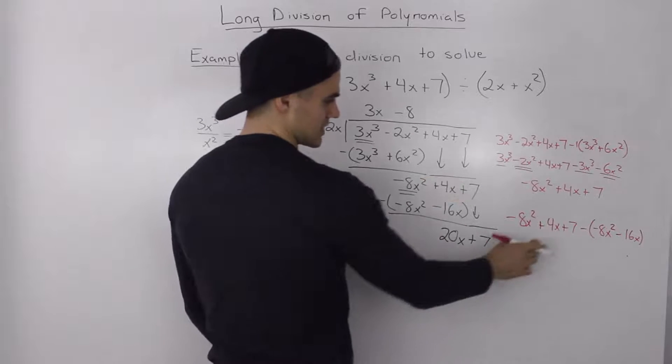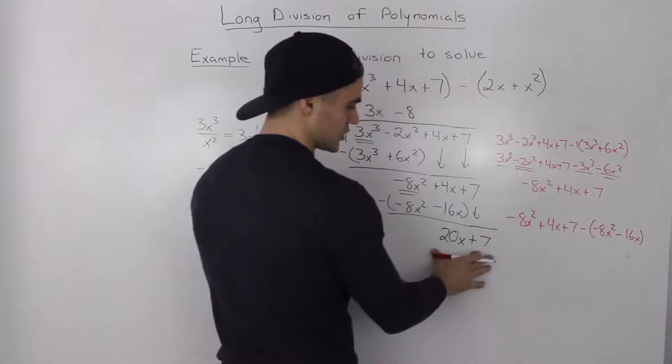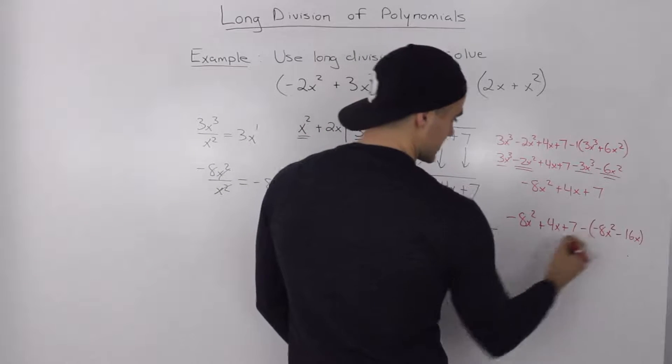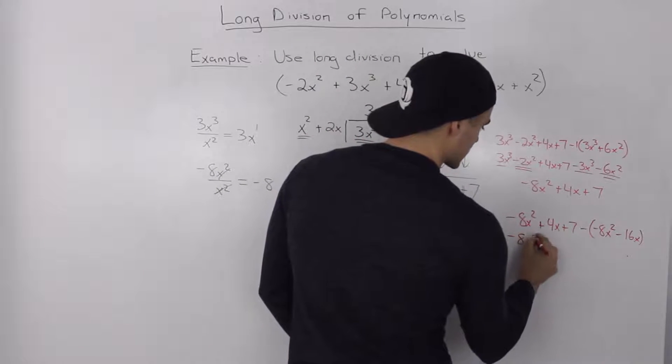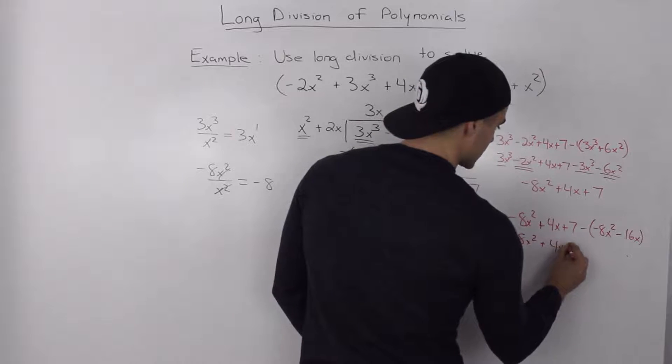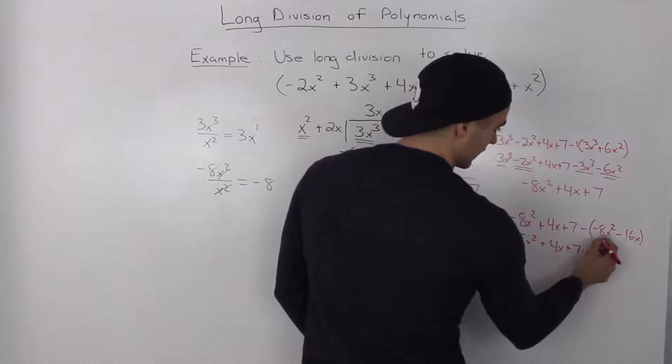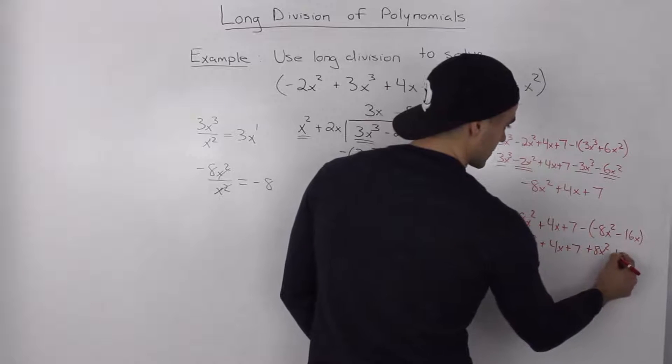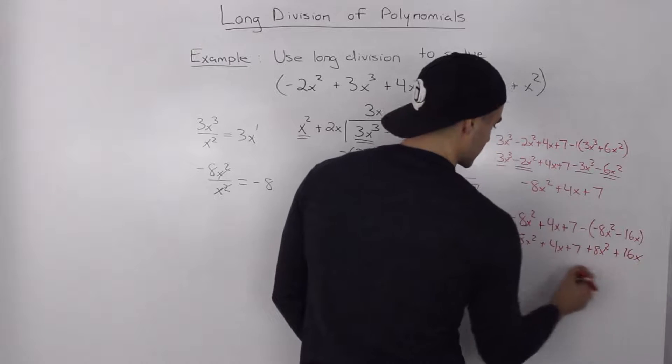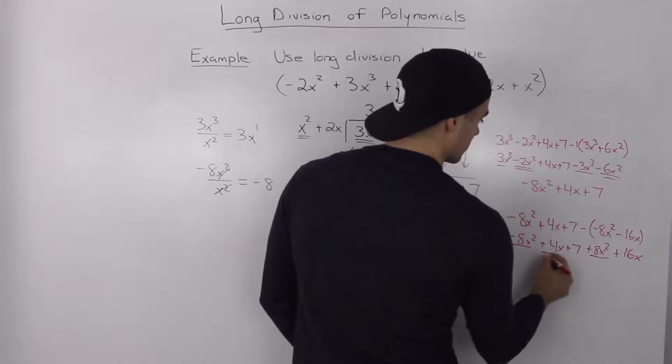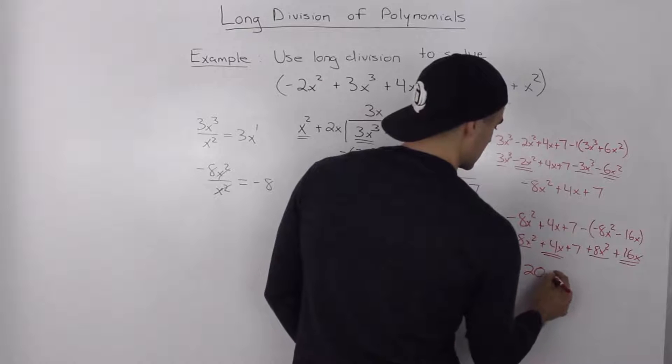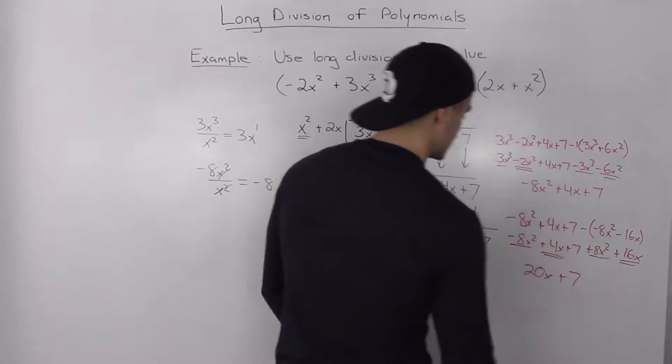Again doing this result on the side to make sure that this 20x plus 7 is correct. So we would distribute this negative 1 inside the bracket. So negative 8x squared plus 4x plus 7. Negative negative that ends up being positive 8x squared. Negative negative that ends up being plus 16x. So this nets out to 0, then 4x plus 16x, that's 20x plus 7.